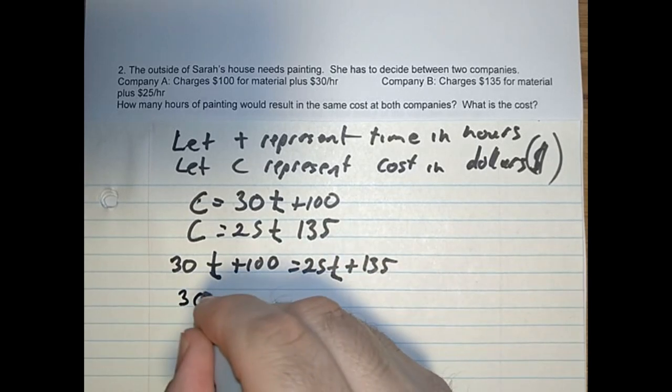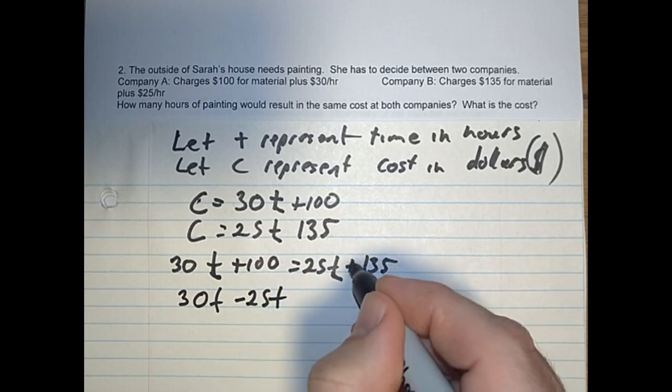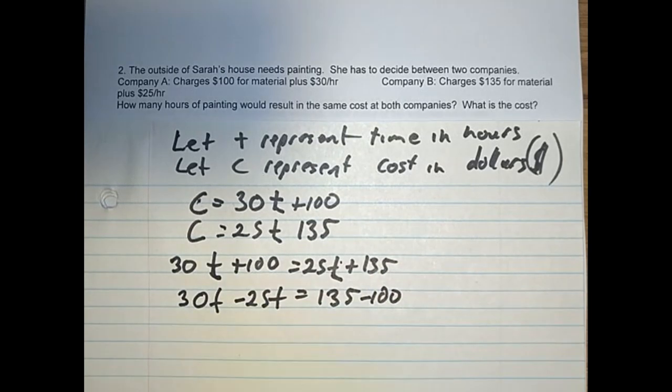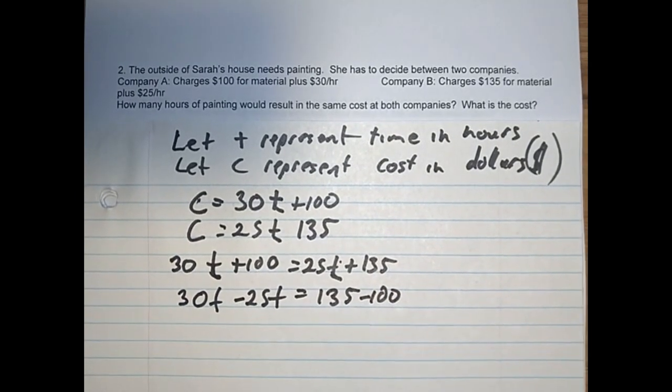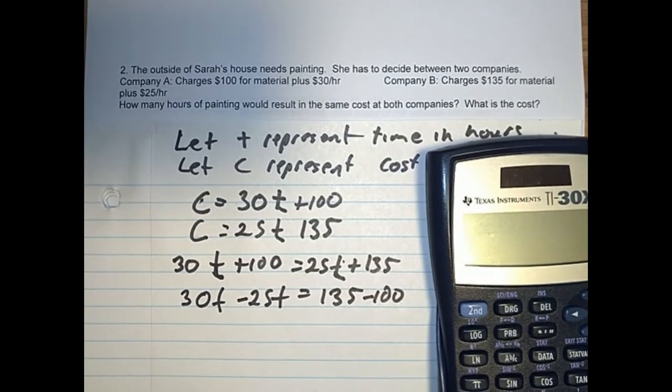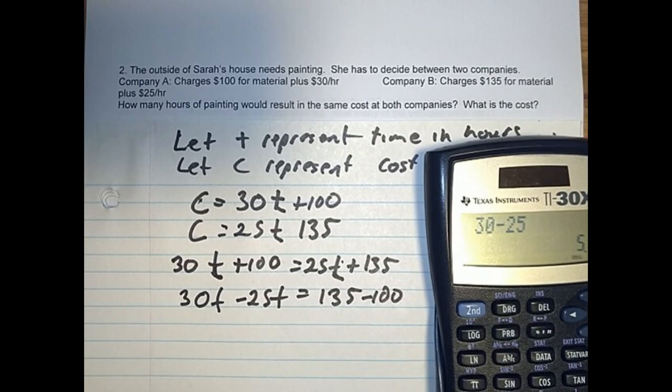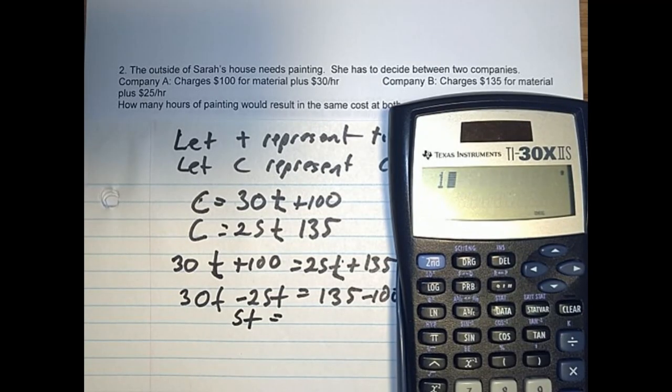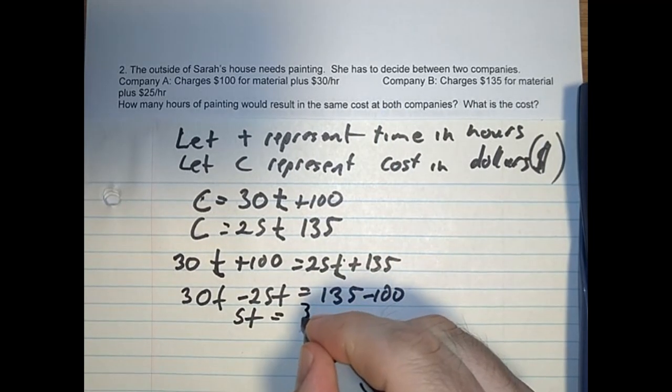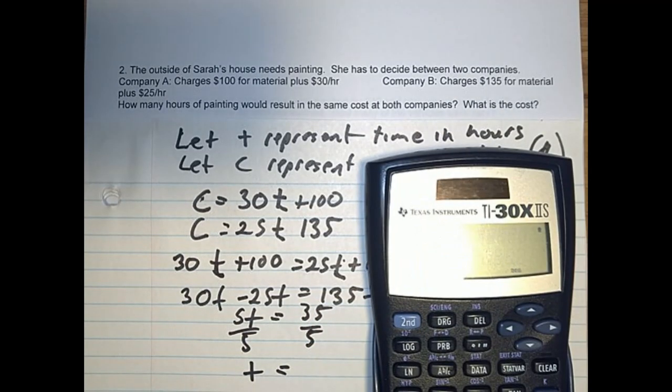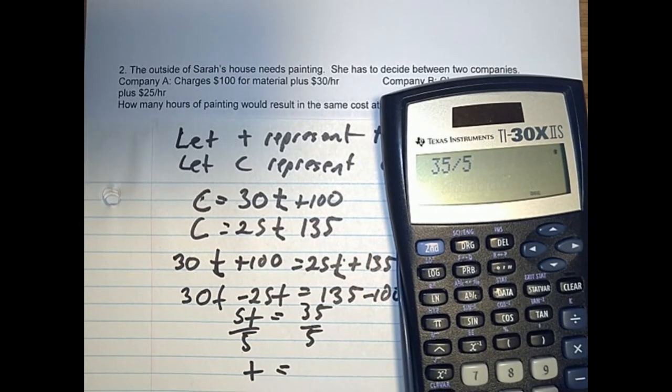The 25T comes over and becomes minus 25T when it crosses the equal sign. The $135 stays on this side. The $100 goes to the other side, so it becomes minus $100. So 30 minus 25, we'll use our calculator. 5T equals $135 minus $100, which is $35. Then we divide by 5, so T equals $35 divided by 5, which is 7.